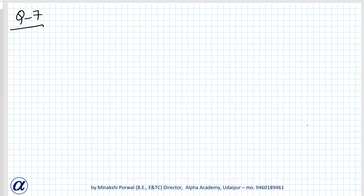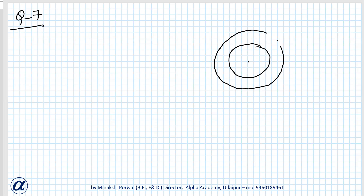Two concentric circles have radii 5 cm and 3 cm. We need to find the length of the chord of the larger circle which touches the smaller circle. Concentric means their centers are the same. The radius of the smaller circle is 3 cm and the bigger circle is 5 cm.